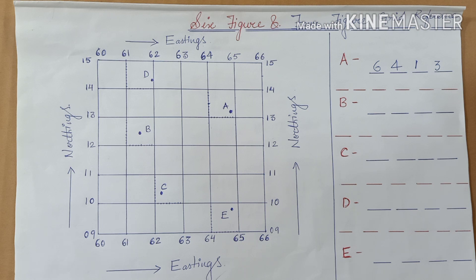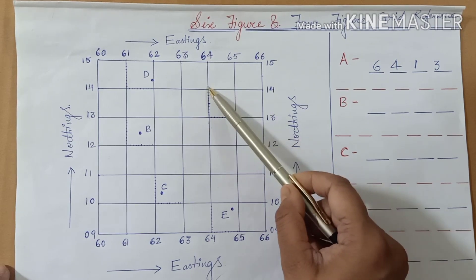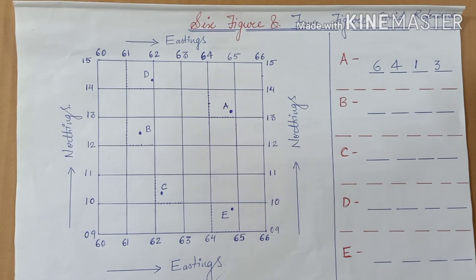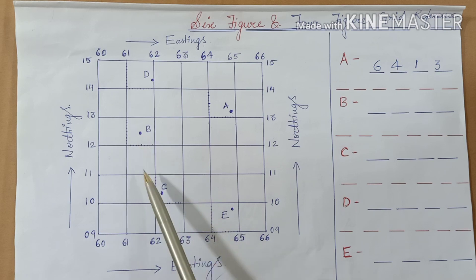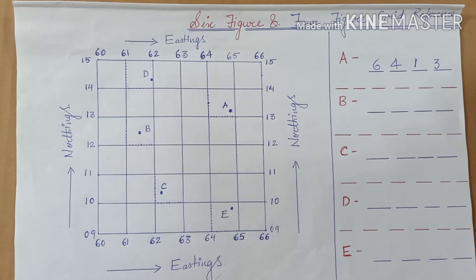Students, the four figure grid reference will tell you the box or the grid where the place lies, but it will not give you a very precise location. For that, we need to learn about the six figure grid reference, which we will cover in the next module. Now let us find out the four figure grid reference of the other places too.